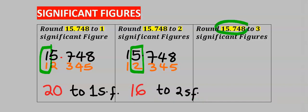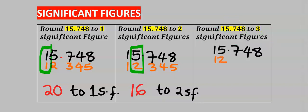Next, let's round 15.748 to 3 significant figures. This is the 1st, 2nd, 3rd, 4th and 5th significant figures.